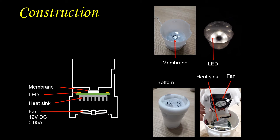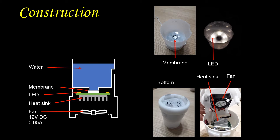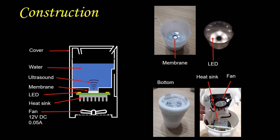When we use it, we first fill the top part with water, and then we can put the cover back on. If we now turn it on, the membrane will produce ultrasound that will create mist on the surface of the water. The fan will then circulate the air around the humidifier to bring the mist out.